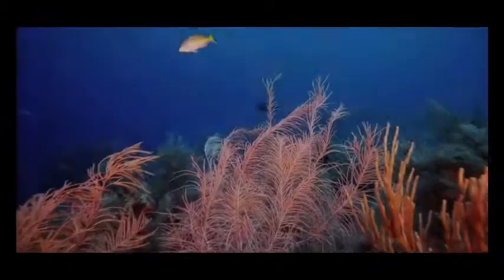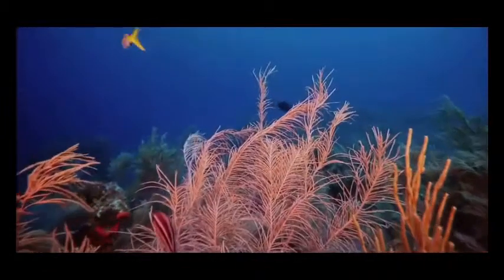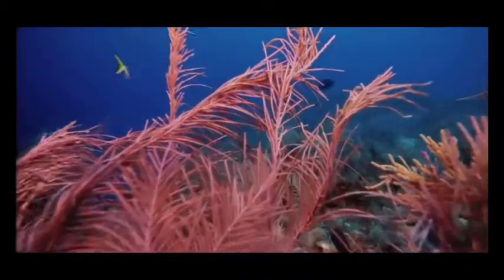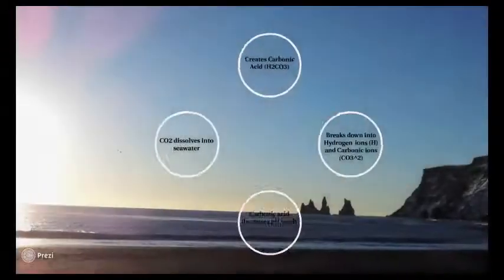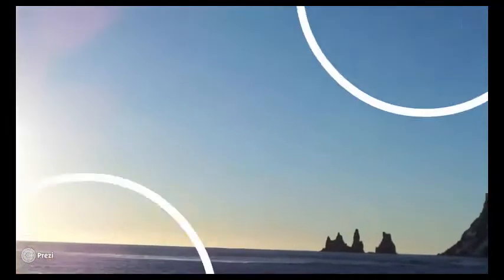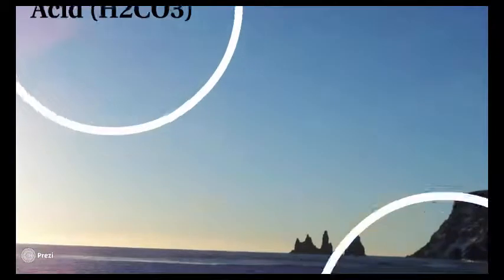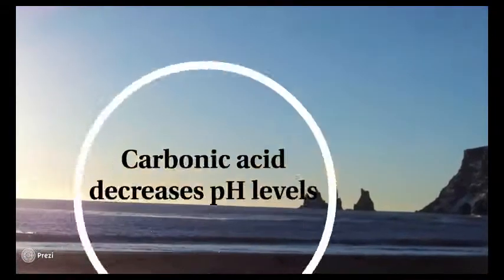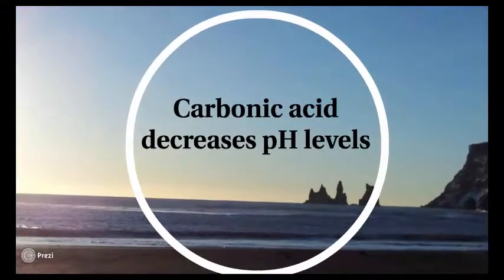Of the many controversial planetary boundary issues in science, ocean acidification is one of the most pervasive. Ocean acidification is when carbon dioxide enters the water column and reacts with the seawater, forming carbonic acid. This then allows the release of hydrogen and carbon ions, and in turn the acidity of the ocean is increased.